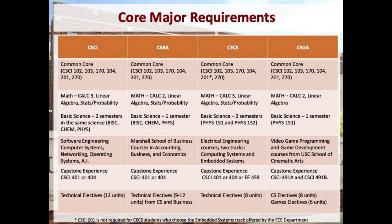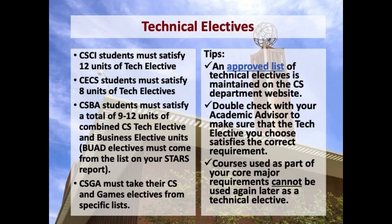The computer science department houses four majors: CSCI, CSBA, CE-CS, and CSGA. All of these programs follow the common core CSCI sequence. Some of their major differences can be seen on this table. Please note that for the CE-CS major, these requirements are mainly highlighting our computing track.